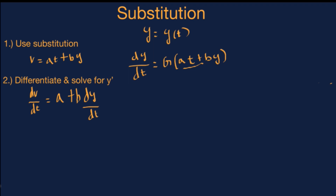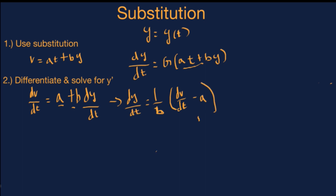Then we can solve for the derivative of y by subtracting a from both sides and dividing by b. When we do that, we get the derivative of y with respect to t is equal to 1 over b times the quantity: the derivative of v with respect to t minus a. Now at this point, we can complete the substitution by plugging in these values back into the original equation.